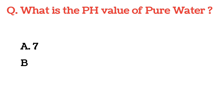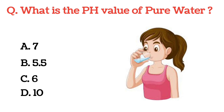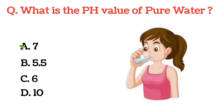What is the pH value of pure water? The correct answer is Option A: 7.